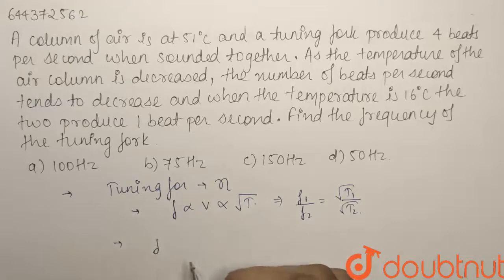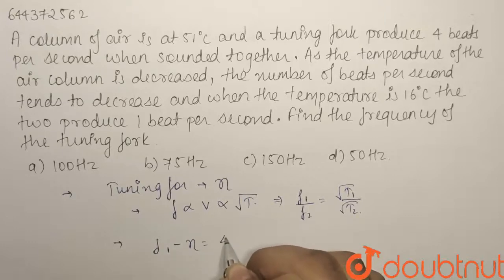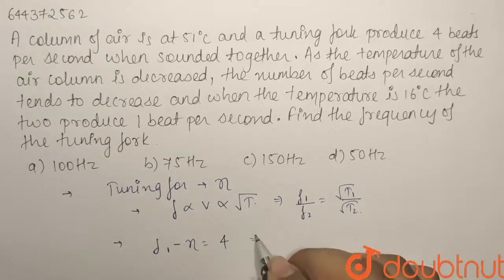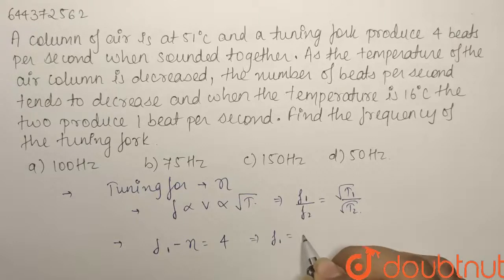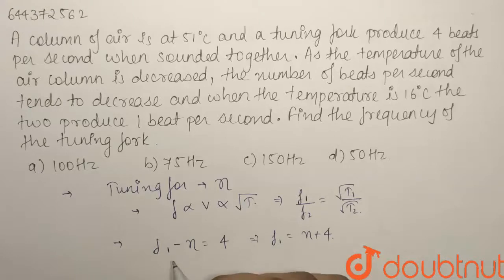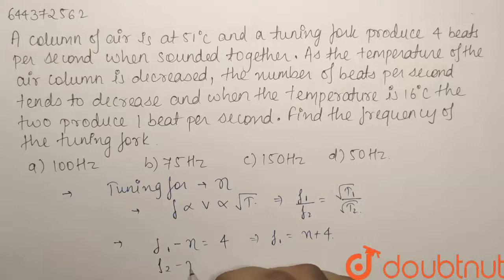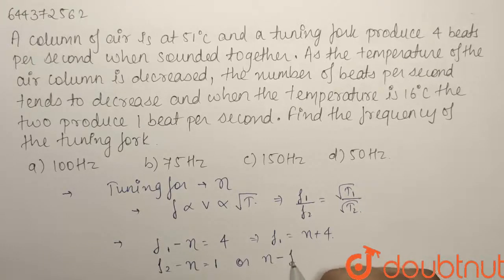From here we have F1 equals to eta plus 4. And for the second case we can have two things: when we are decreasing the temperature it can be either F2 minus eta equals to 1 or eta minus F2 equals to 1.